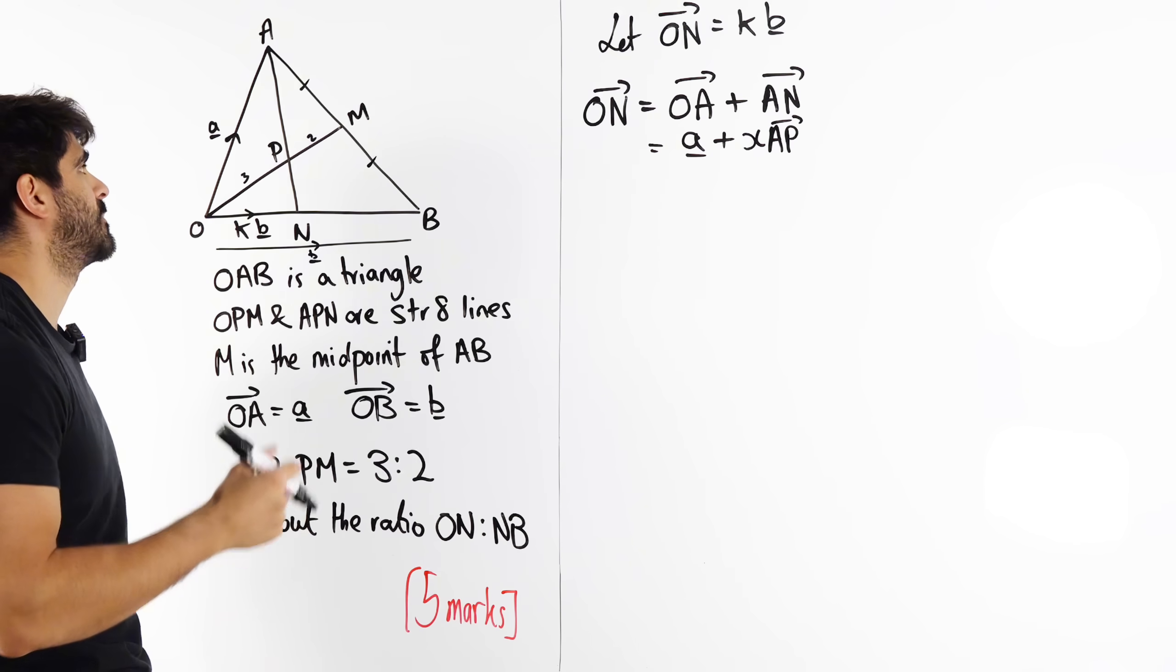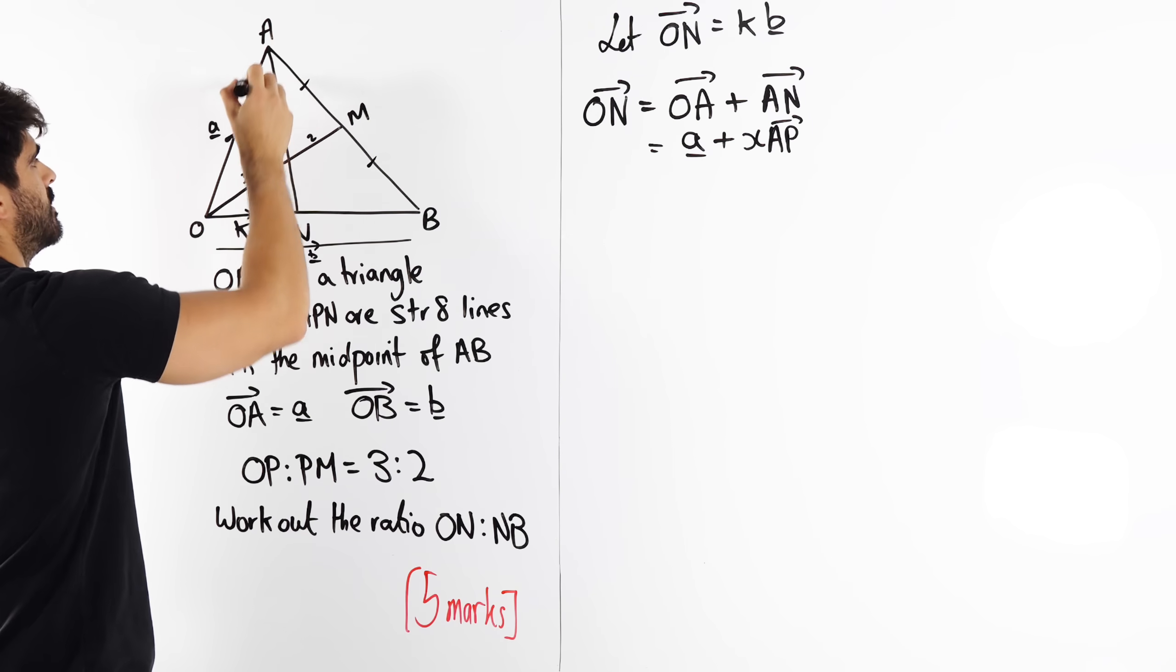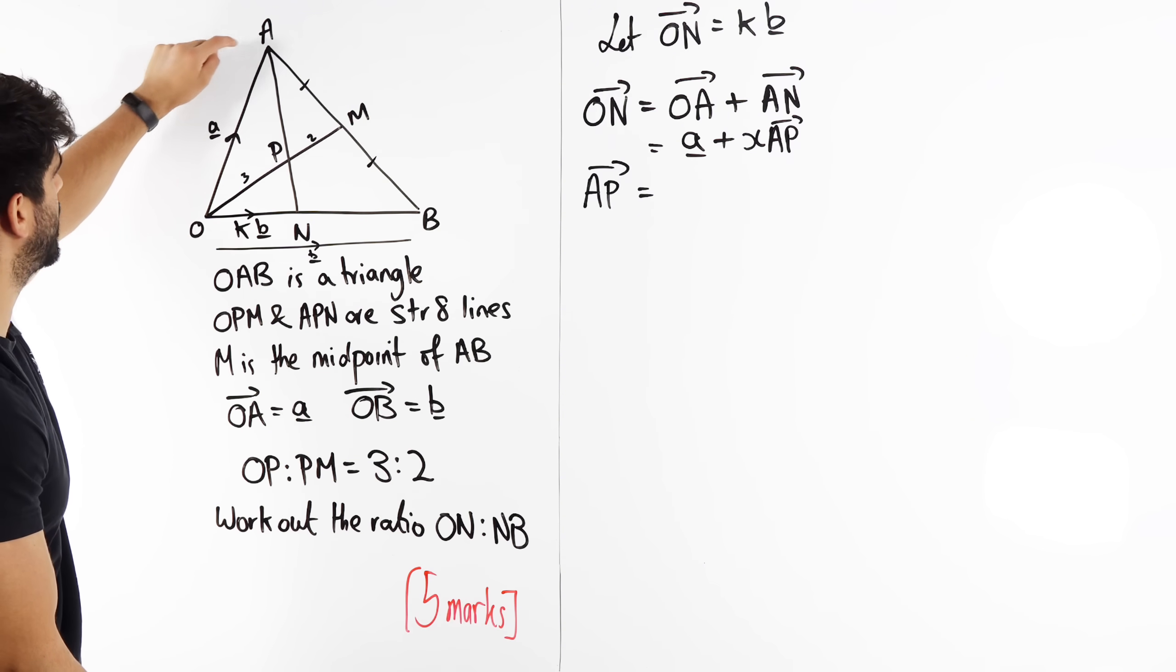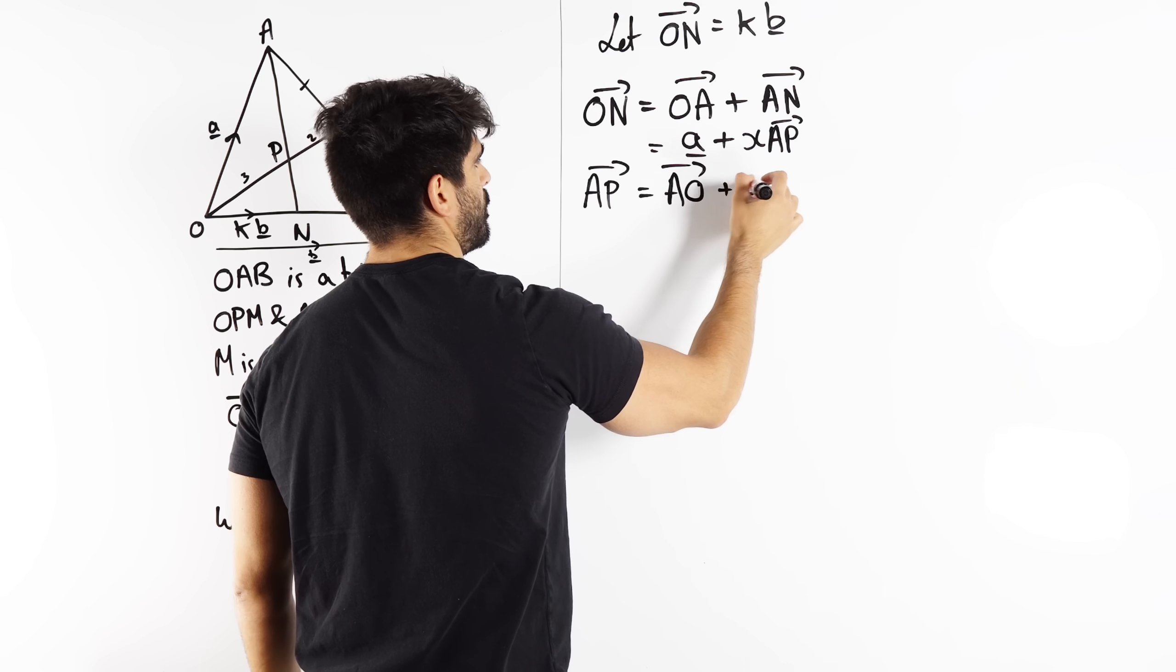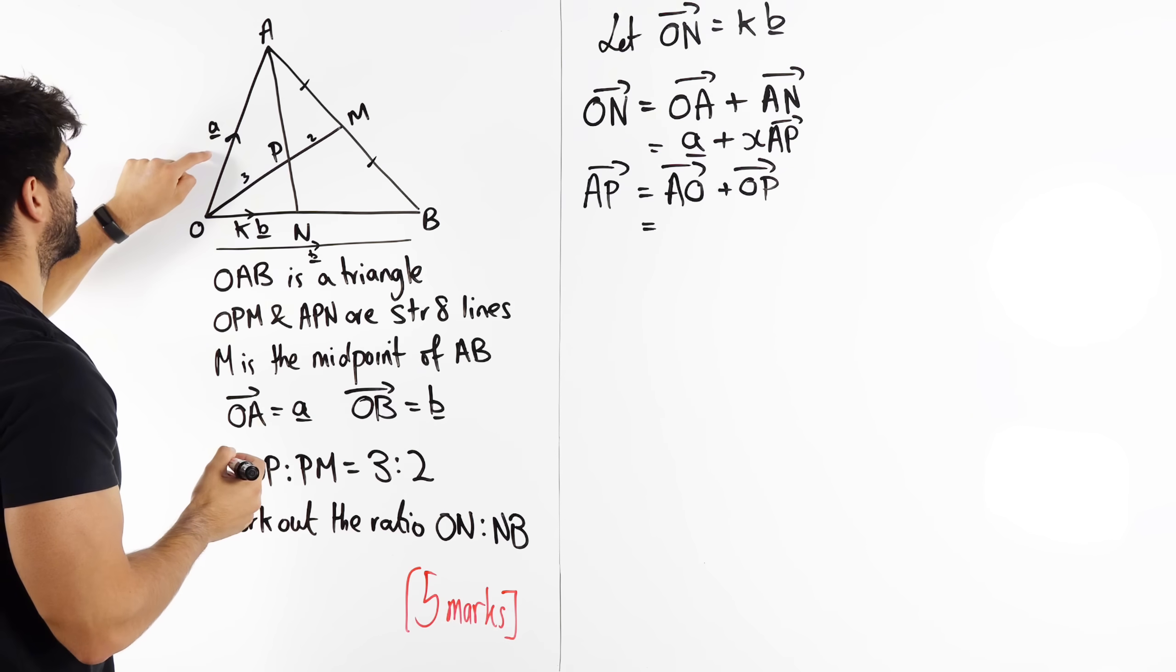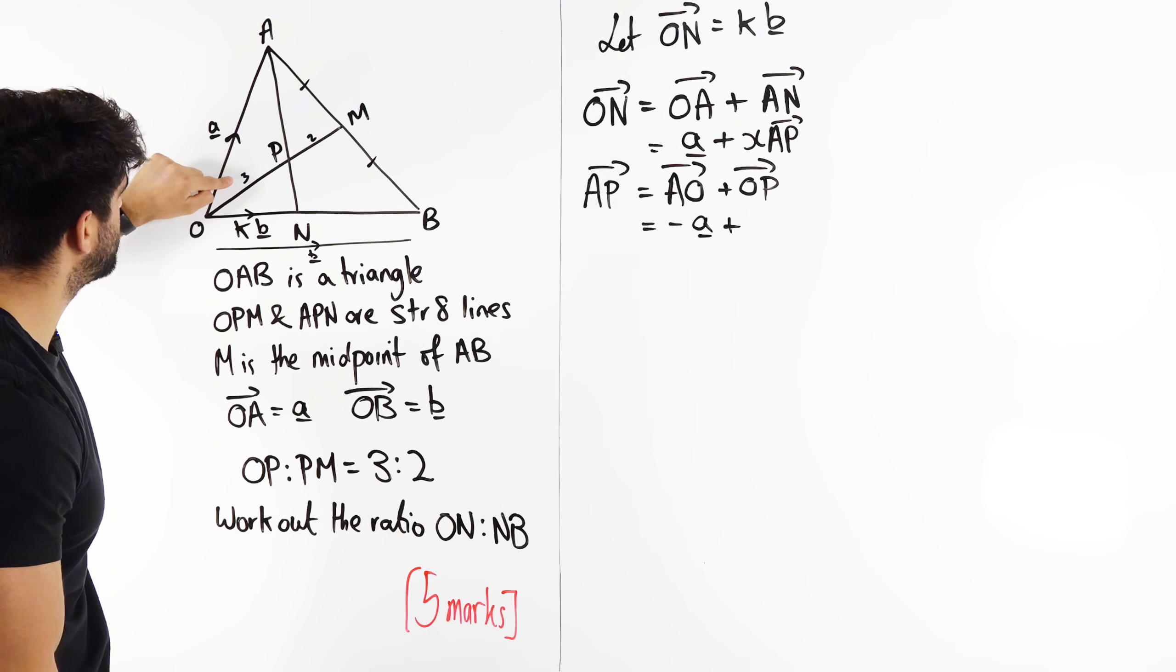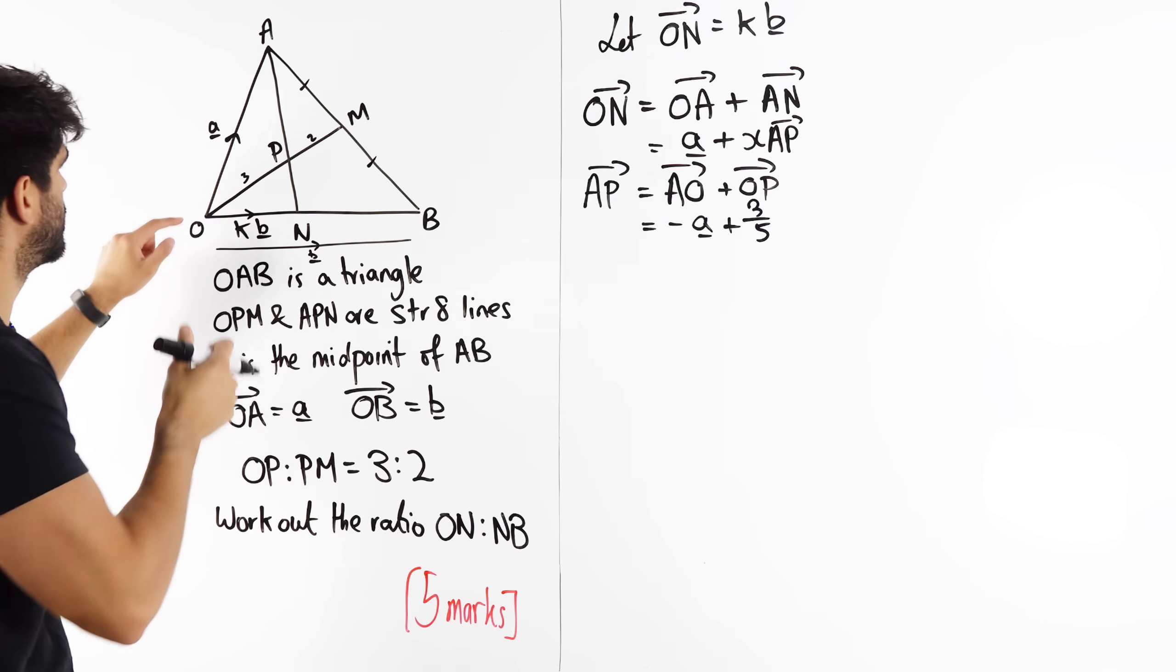So it's my job now to work out what A to P is. How do I go from A to P? Well, we need to lay out that pathway. A to P, and to go from A to P, I'm going to go back to O, and I'm going to go OP. So I'm going to OP, OP is three parts out of five, three parts out of five of OM.